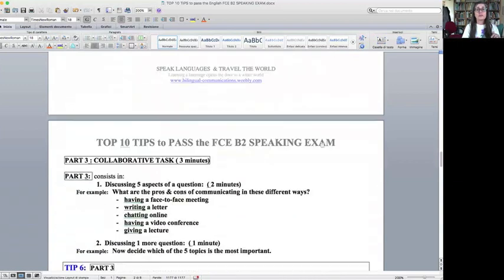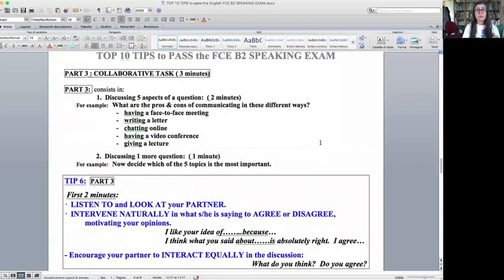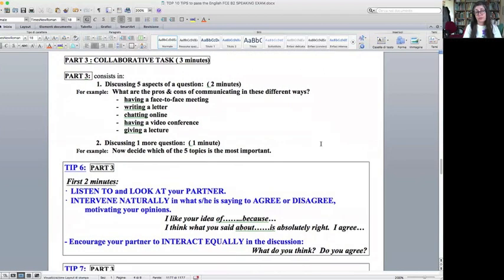Then we go on to part three, the collaborative task, which lasts three minutes. Now part three consists in discussing five aspects of a question. There's usually a central question, which in my example is what are the pros and cons of communicating in these different ways. And then you have five different examples of communication, for example a face-to-face meeting, a letter, an online chat, a video conference, or a lecture. And you have to discuss with your partner for two minutes about this. And then the second part is one minute discussing one more question usually connected to this topic.